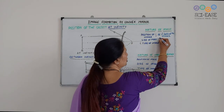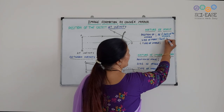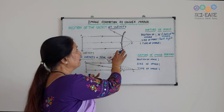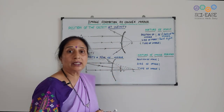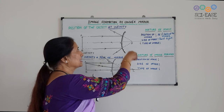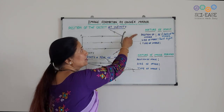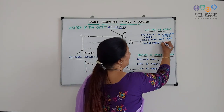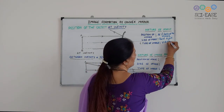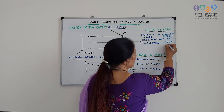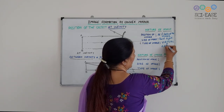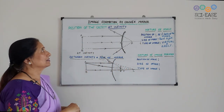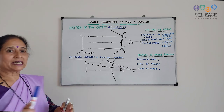Size of the image: point-sized. Nature of the image: you must write, whenever it is asked — draw the ray diagram when the object is at this position — you must write these three points: position, size, and type. Type means virtual and erect image is formed. This is the first case when the object is at infinity.